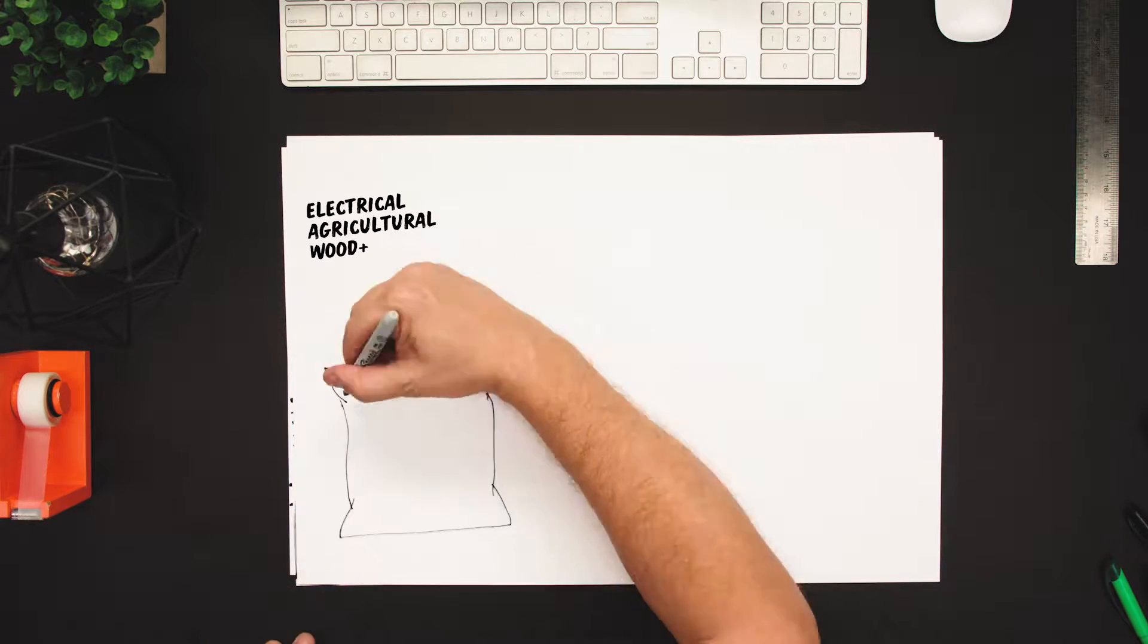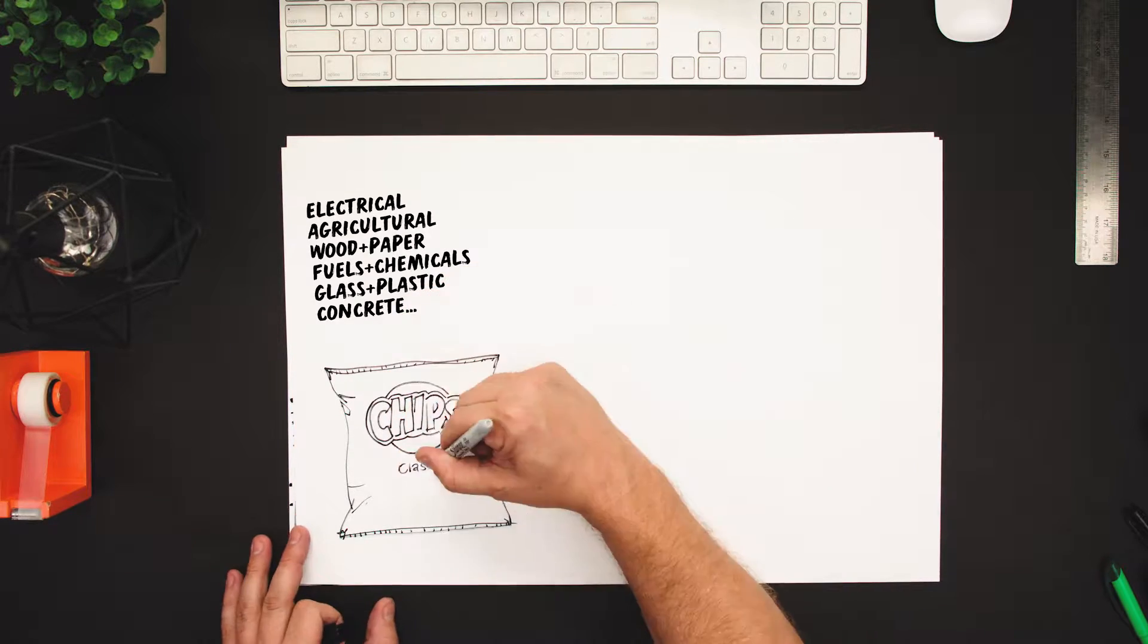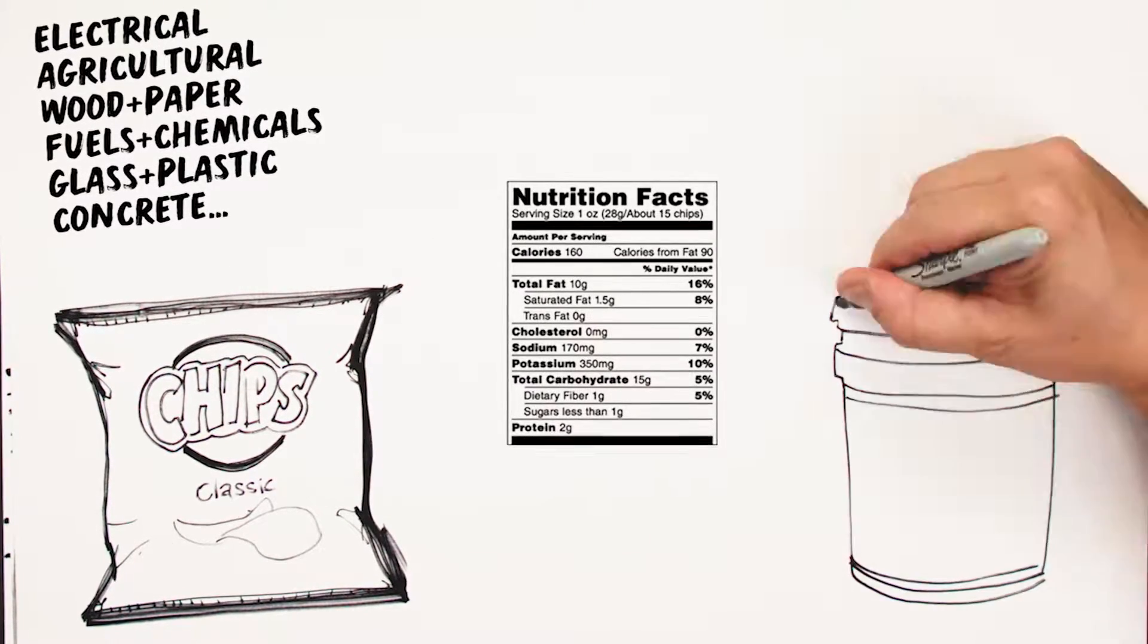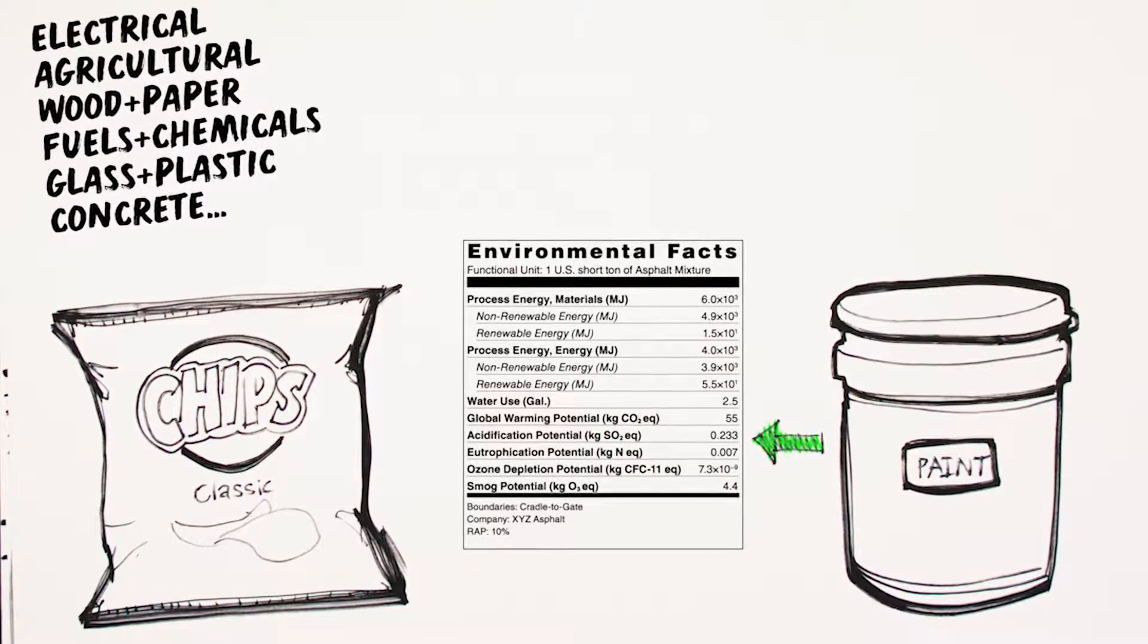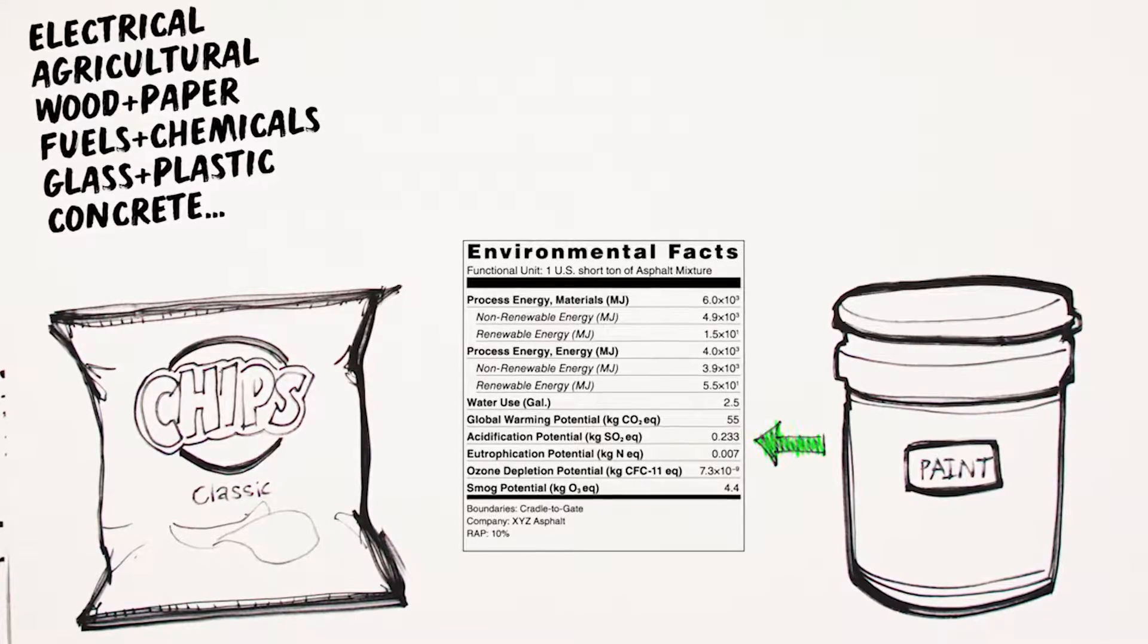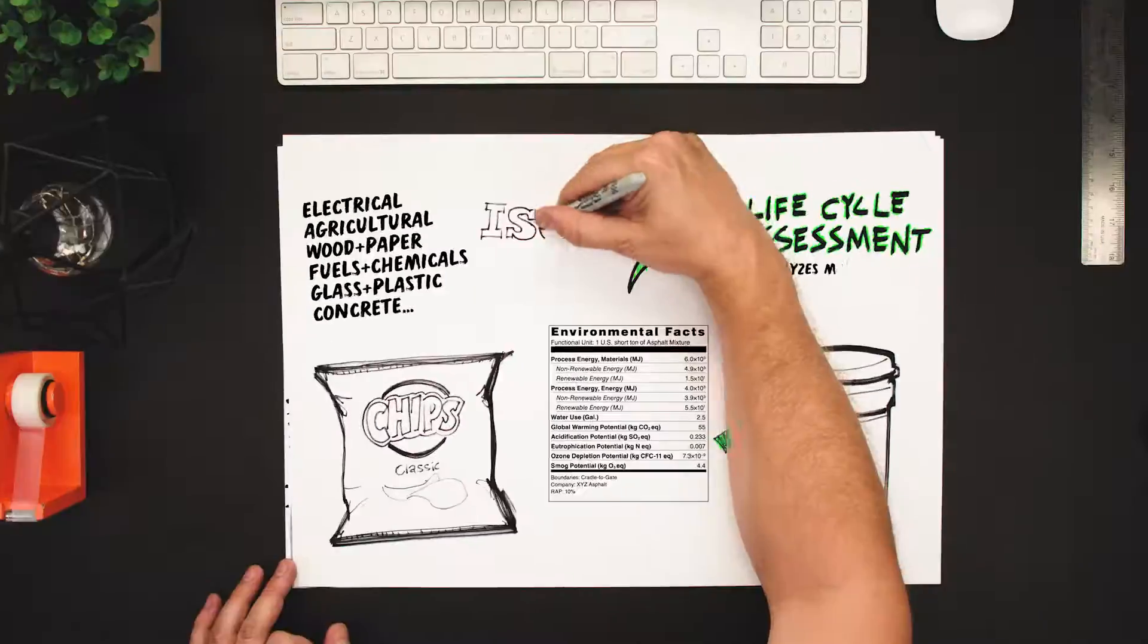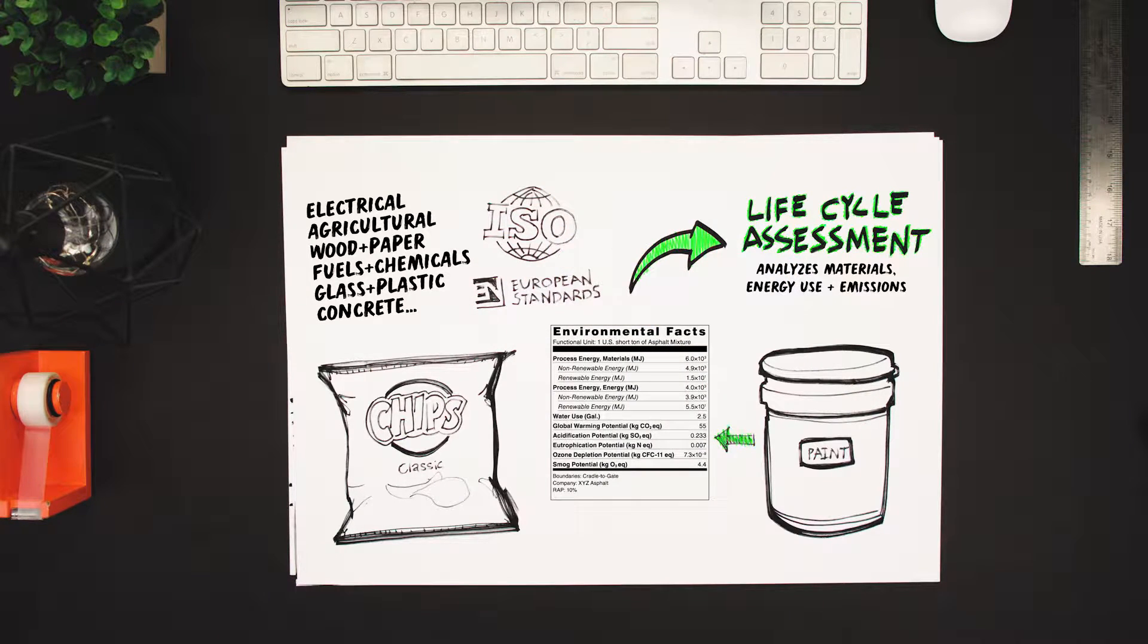EPDs exist in a number of different industries and, just like the nutrition label on a bag of chips makes clear the calories, sodium, and total carbohydrates in every serving, an EPD will quantify and report a product's potential environmental impacts based on something called a life cycle assessment, which is an ISO standards-based method for analyzing the materials, energy use, and emissions of a product.